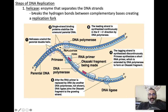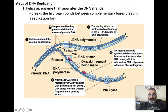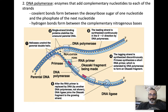Step one: helicase. When you see '-ase' at the end, that's an enzyme. Helicase is an enzyme that breaks the hydrogen bonds holding the two DNA strands together. Those strands are being held together by hydrogen bonds, and helicase breaks them, creating what's called the replication fork. So the replication fork is made by helicase — that's the first step of replication.